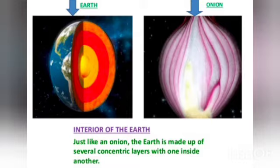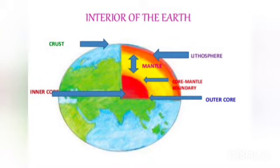What is the earth made up of? Just like an onion, the earth is made up of several concentric layers with one inside another. See the picture above. This is the interior of the earth. It is made up of three layers: crust, mantle, and core.